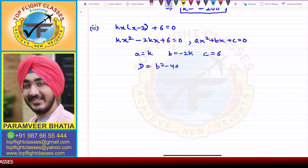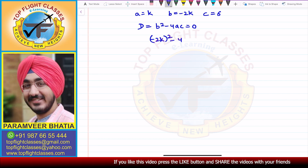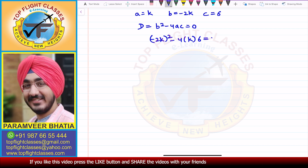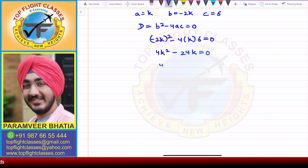Now finding the discriminant b² - 4ac, which we need to set equal to zero for two equal roots. Substituting: (-2k)² - 4 × k × 6 = 0, which gives 4k² - 24k = 0.